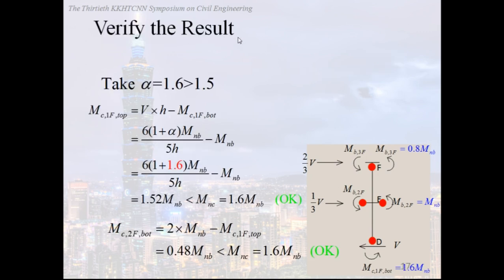Verify the result. If we take alpha equal to 1.6, larger than 1.5 which we derive, we found that the MC first floor at the top and the MC2F at the bottom smaller than MNC. So the results are all beam mechanism.